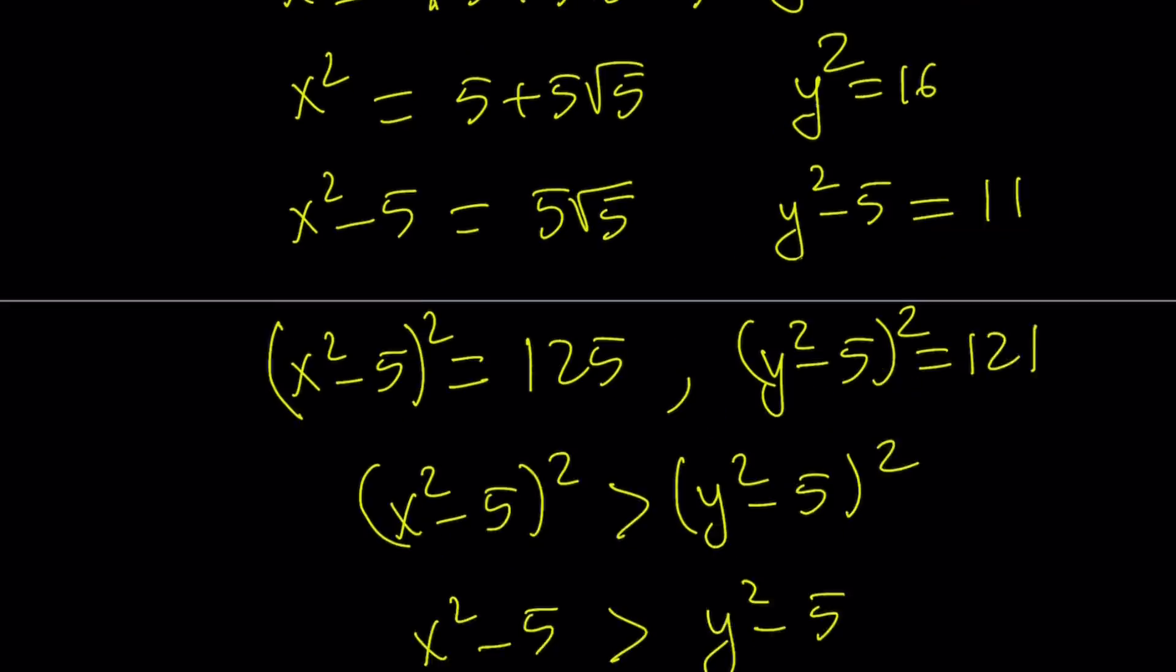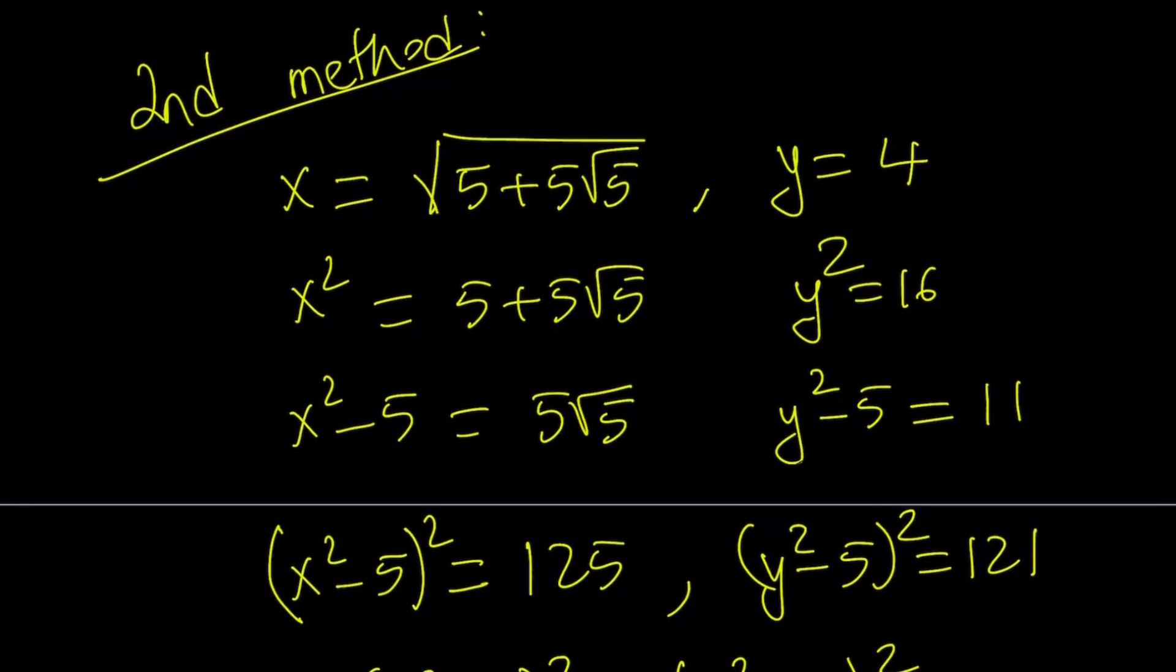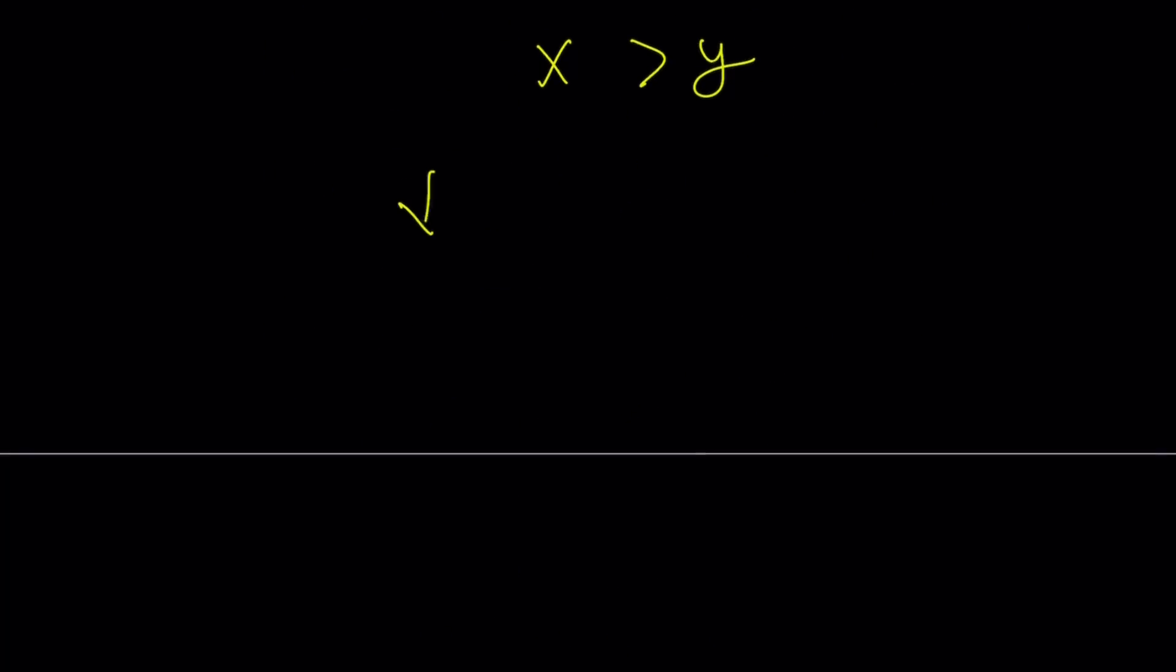It's a little more algebraic approach, a solution with algebraic flavor. So, our radical wins. Again, the square root of 5 plus 5 root 5 is greater than 4.